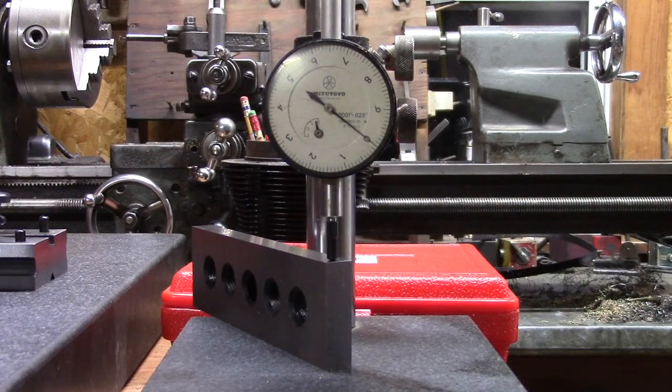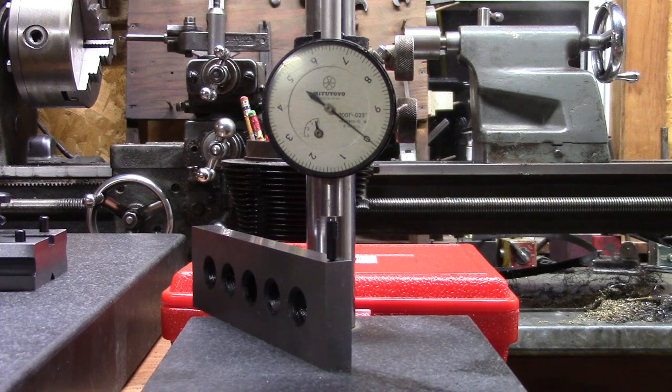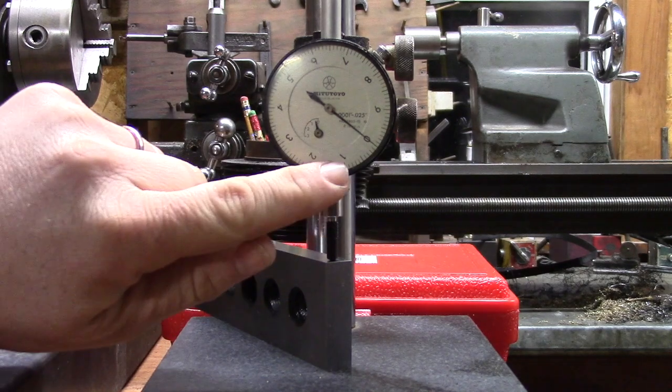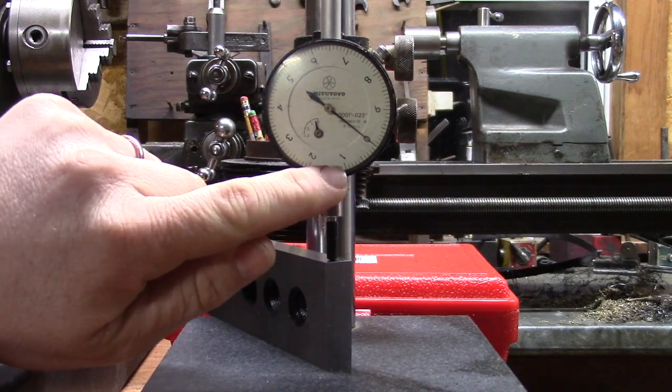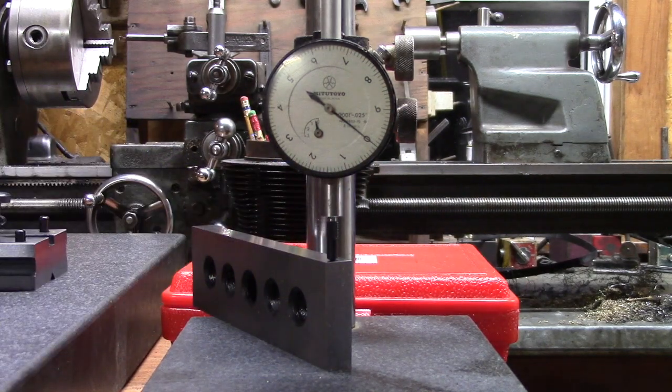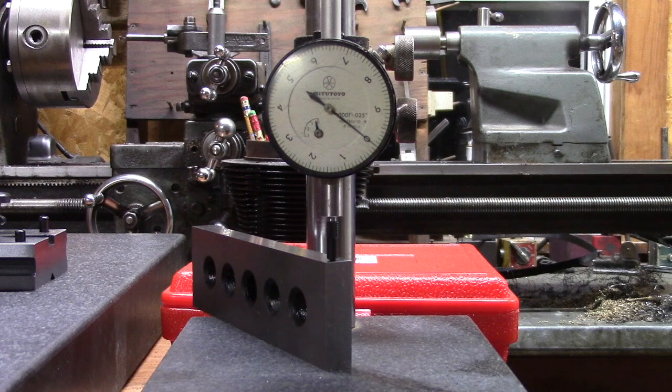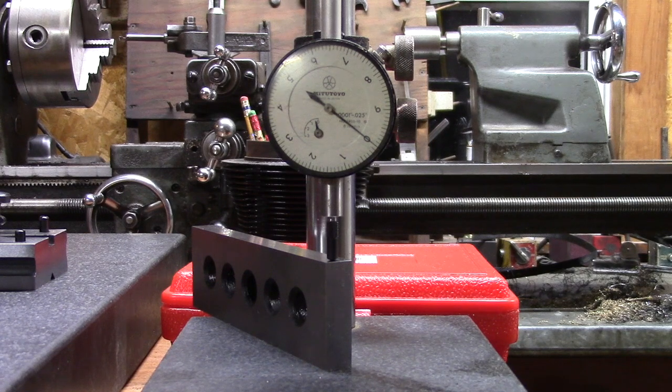I am set up here with a Mitutoyo dial drop indicator that reads down to tenths. Each division on the indicator is one tenth on the minor divisions and the major divisions are thousandths. We're going to check the height of these parallels with this and then we're also going to double check parallelism with a Brown and Sharp best test indicator on my granite table.